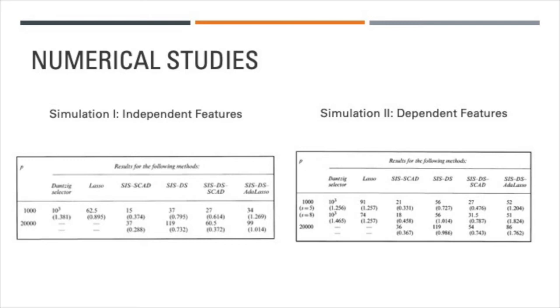You will notice four missing entries on both the tables presented because of the limited computing resources. For each of the above six methods presented in the two tables, the results are shown as the median of the selected model sizes and the median of the estimation errors. You will notice that the best simulation results are presented by using a combination of SIS and SCAD together. It can also be concluded that SIS, in combination with the Dantzig selector and another method, reduced estimation errors as compared to using only SIS and the Dantzig selector.